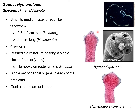For Hymenolepis diminuta you can see the suckers, but on the rostellum there are no hooks. This parasite is a small to medium-size thread-like tapeworm ranging 2.5 to 6 cm in length. For H. nana it is 2.5 to 4 cm — hence also known as dwarf tapeworm. For H. diminuta it is 2 to 6 cm. They possess four suckers on the scolex, a retractable rostellum bearing a single circle of hooks (absent in H. diminuta), and unilateral genital pores in each proglottid.